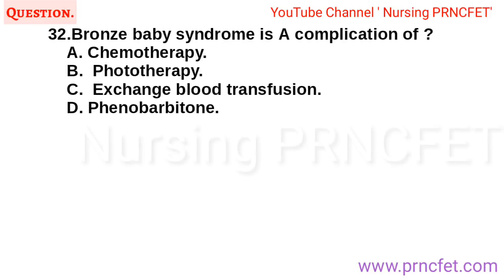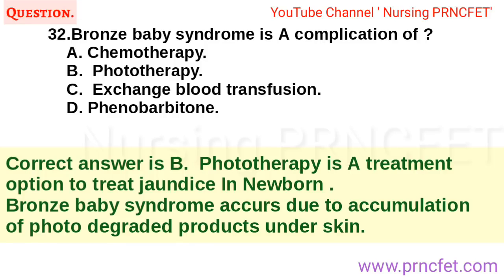Question 32: Bronze baby syndrome is a complication of: A. Chemotherapy. B. Phototherapy. C. Exchange blood transfusion. D. Phenobarbitone. Correct answer is B. Phototherapy is a treatment option to treat jaundice in newborns. Bronze baby syndrome occurs due to accumulation of photodegraded products under the skin.